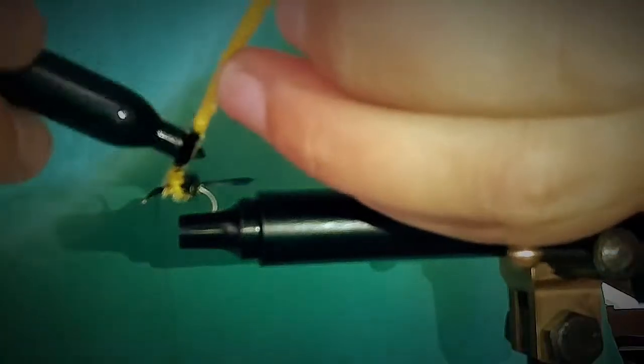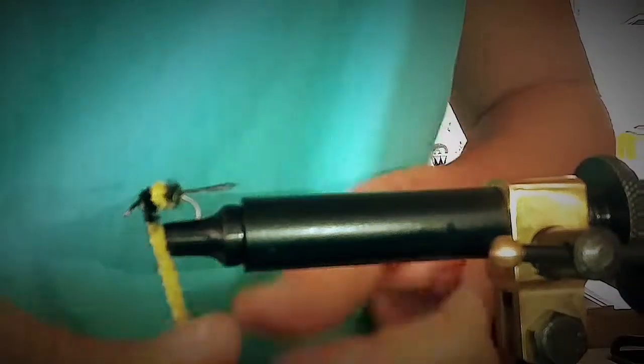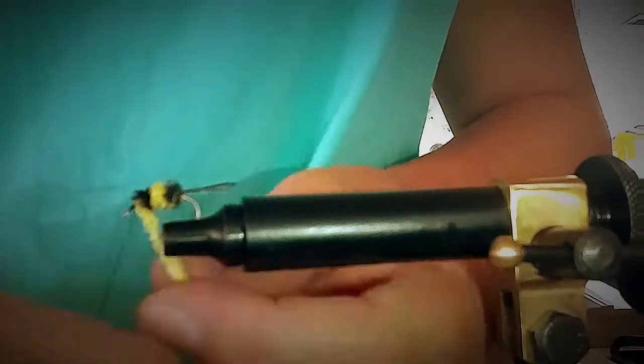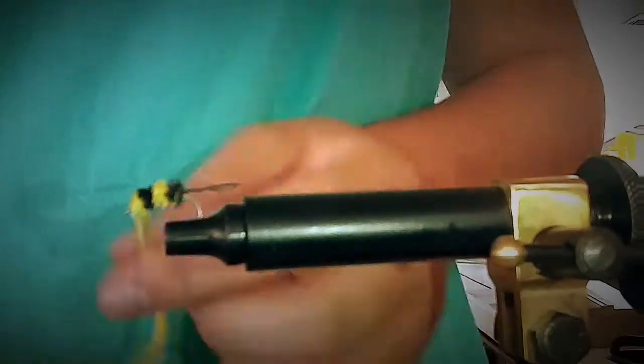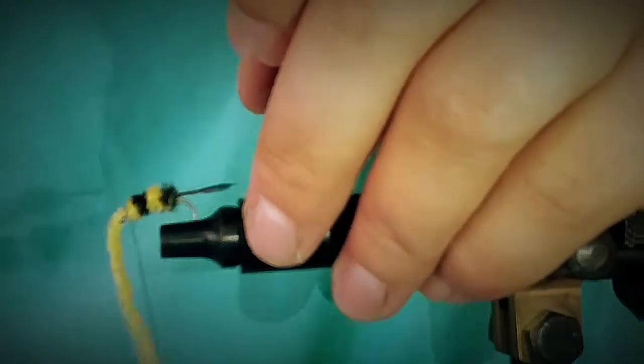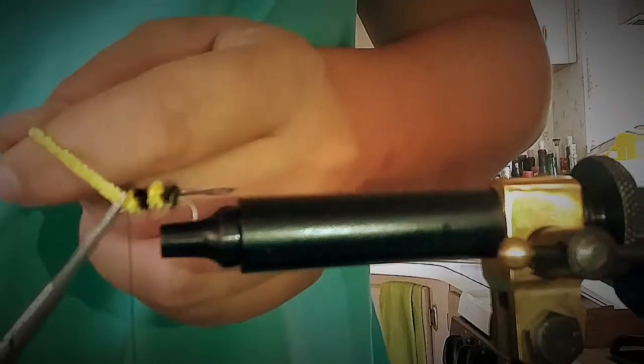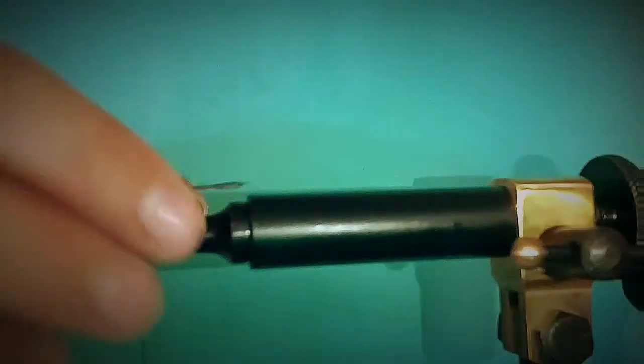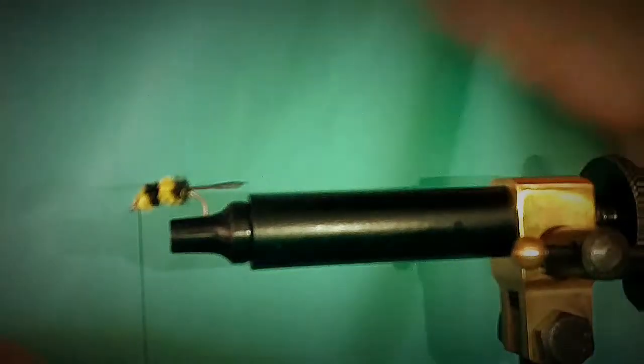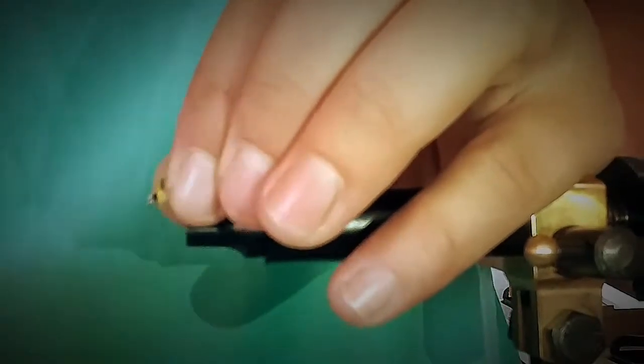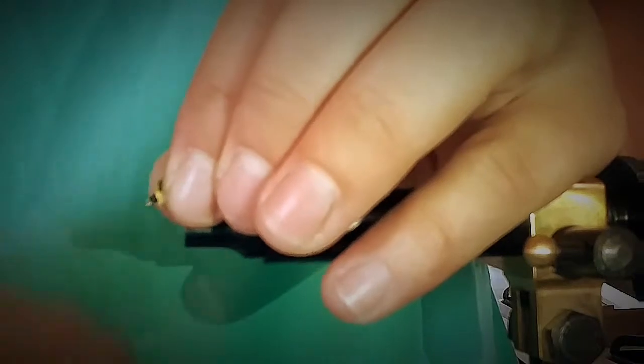Just a quarter of an inch, three-eighths of an inch. It's all what you make it. And then I'm going to end with the yellow because I'm going to make a head with my black thread. I have limited space because I do have a size ten hook. And then just wrap it until you have a tiny little head on there.